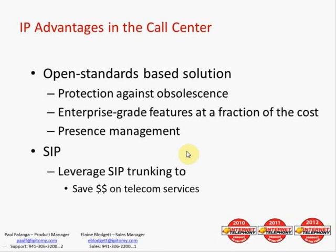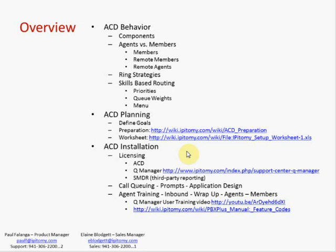The considerations there are bandwidth. As you deploy in any location, make sure your bandwidth allocations are high enough to handle the traffic flow necessary for the application. We're not going to get into bandwidth today. We're going to stick primarily onto the ACD and learn about its behavior, then go into ACD planning and then the installation. This is the overview of what we hope to cover in this hour-and-a-half segment.